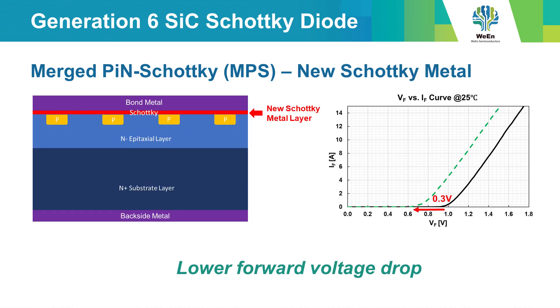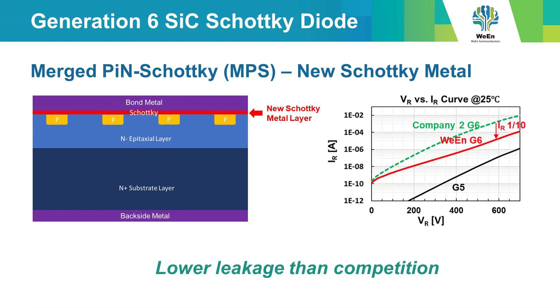Generation 6 Schottky diodes have a lower forward voltage drop VF. This is realized by using a different Schottky metal. Leakage current may go up because of this, but special measures have been taken to limit this effect.